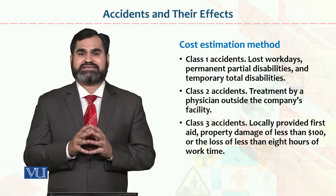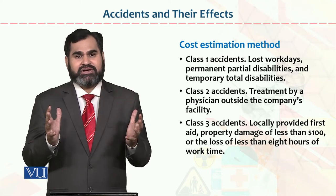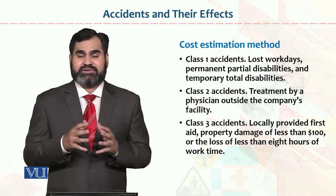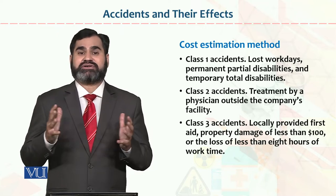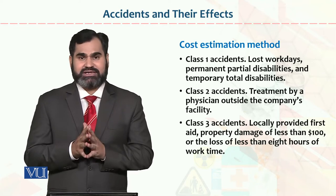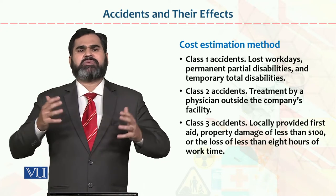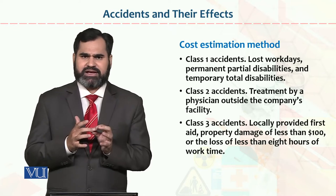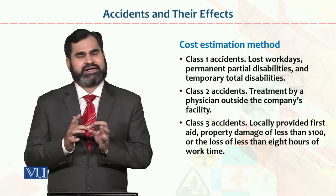Permanent or partial disabilities can also occur in class one accidents. If an accident occurs in an organization, it might result in injury to a leg — the complete leg may be damaged or part of it damaged. This is called permanent or partial disability. There can also be temporary total disability for a short-term period — for example, a minor nail injury that may be recovered after one month or two weeks.